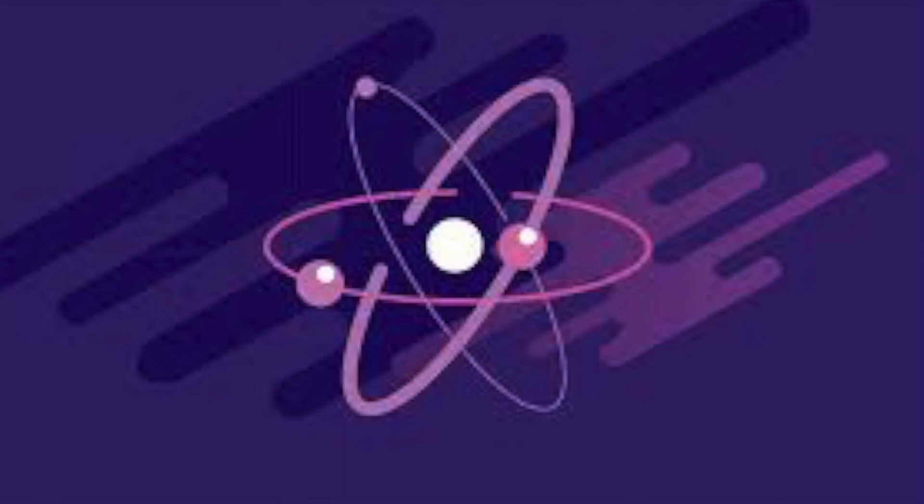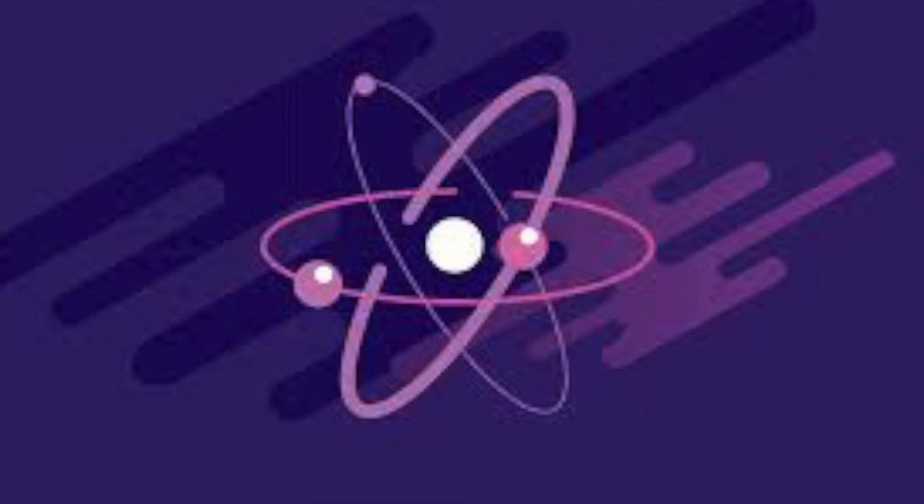The number of electrons can also vary in atoms of the same element, thus producing ions, or charged atoms. For instance, iron, Fe, can exist in its neutral state or in the plus one and plus two ionic states.